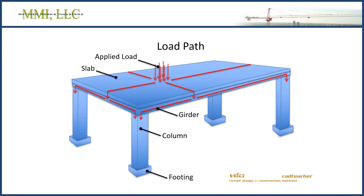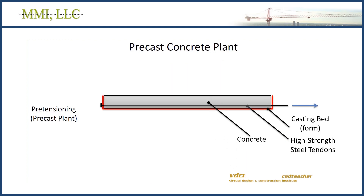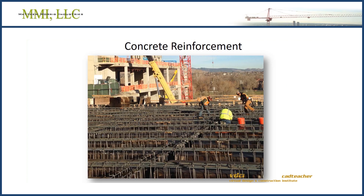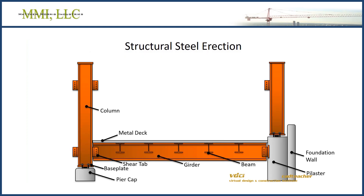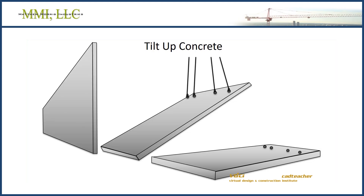The second course continues to build on this foundation as the structure rises out of the ground. We'll focus heavily on the two primary material types, concrete and steel, specifically cast-in-place concrete and structural steel. Then we'll move on to other structural options like masonry, tilt-up concrete, and wood.